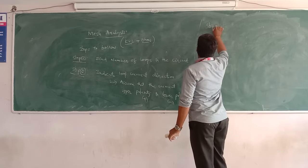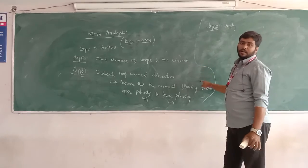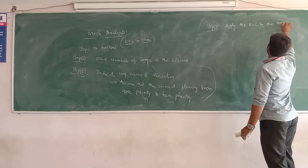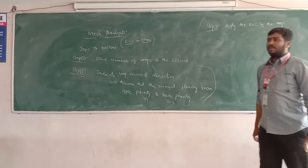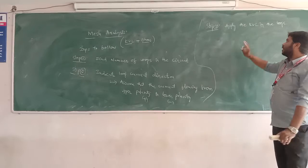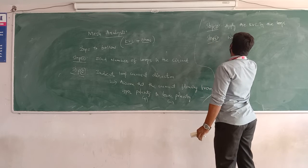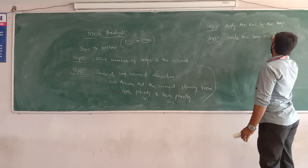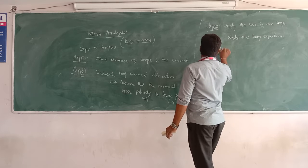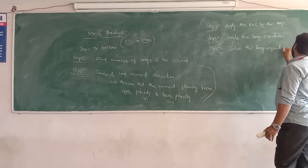Step 3: Now we apply KVL to all the loops. KVL states that the algebraic sum of voltages in a loop is equal to zero. Apply KVL to all loops. Step 4: Write the loop equations. Step 5: Solve the loop equations. These are the five steps to follow for mesh analysis.